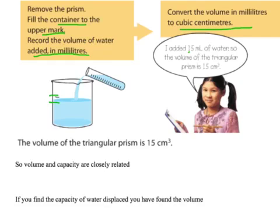So if she added 15 milliliters of water, the volume of that prism is 15 centimeters cubed. This does show you that volume and capacity are very closely related.